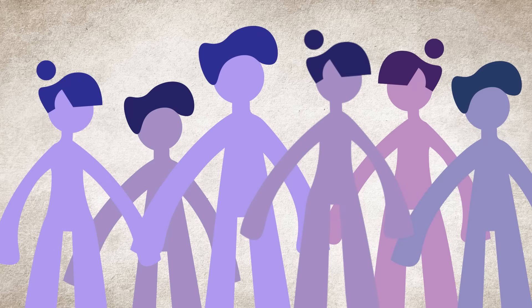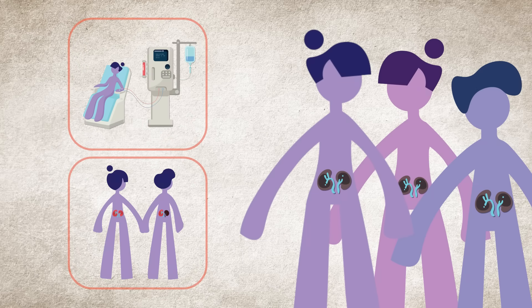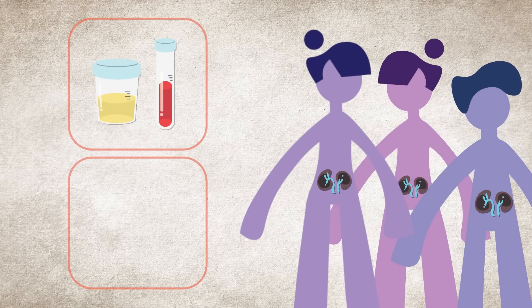Lupus nephritis will develop in about half of patients with lupus, and if left untreated may lead to kidney failure, which could require dialysis or a kidney transplant. Blood and urine testing is recommended every three to six months to check kidney health before symptoms develop.